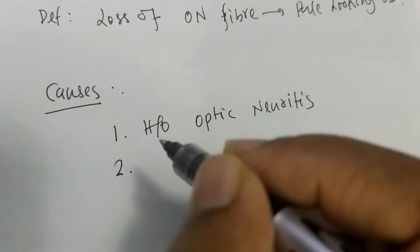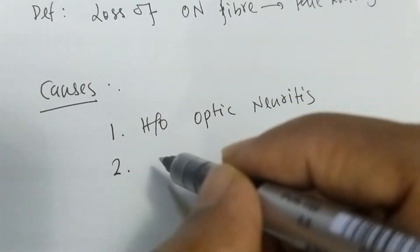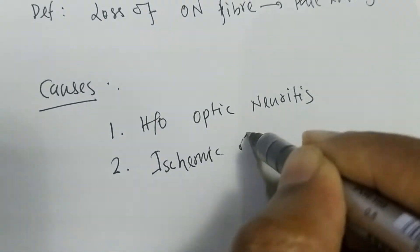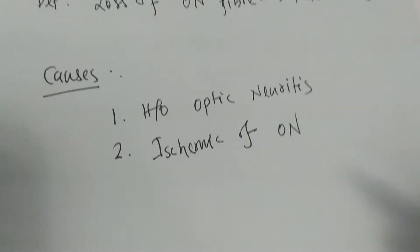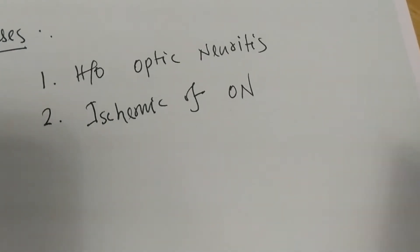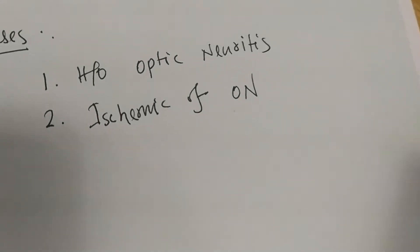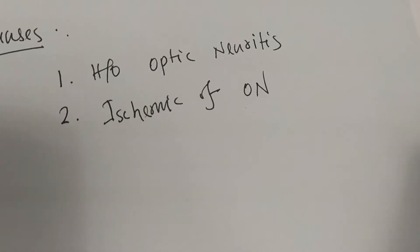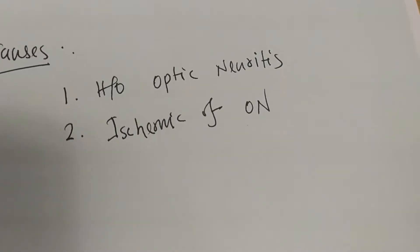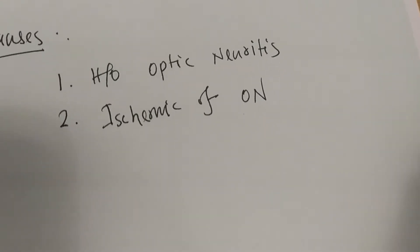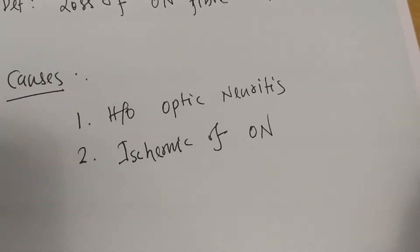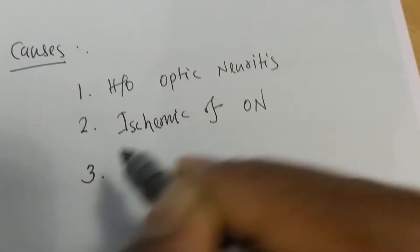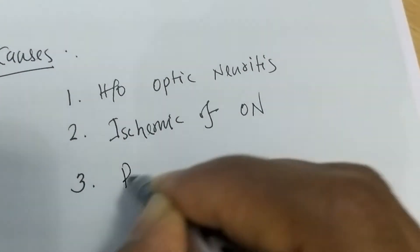Cause number two: ischemia of the optic nerve, due to thrombosis or obliteration of the optic or central retinal artery. This ischemic damage of the optic nerve gradually leads to loss of optic nerve fiber.